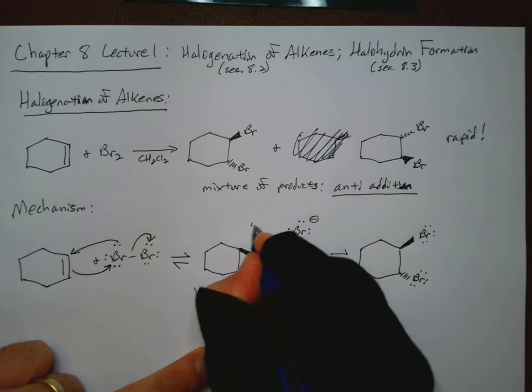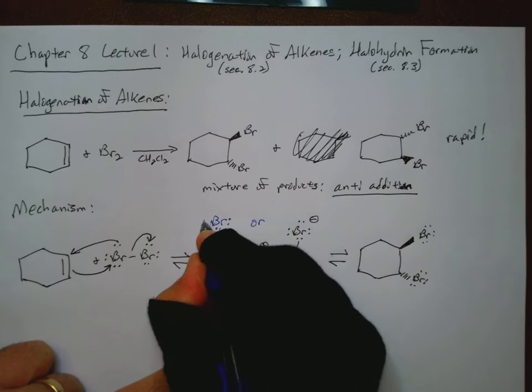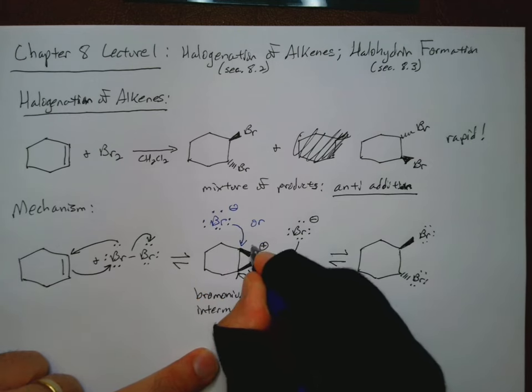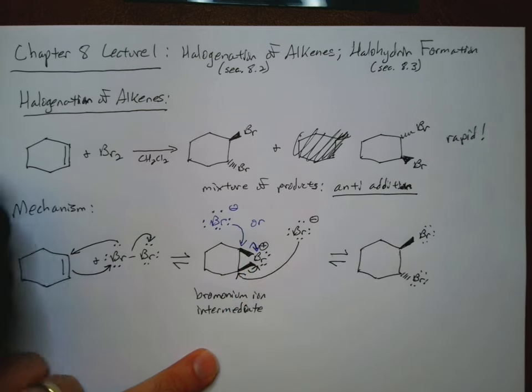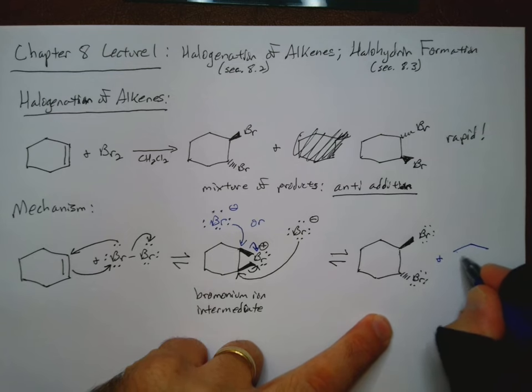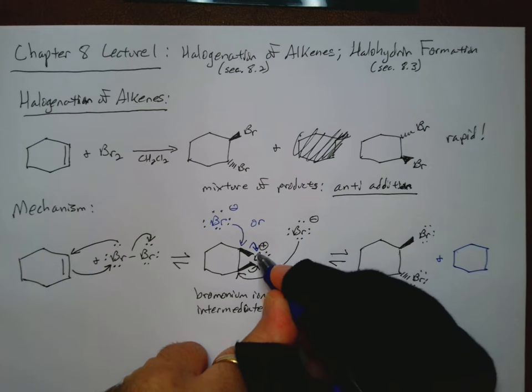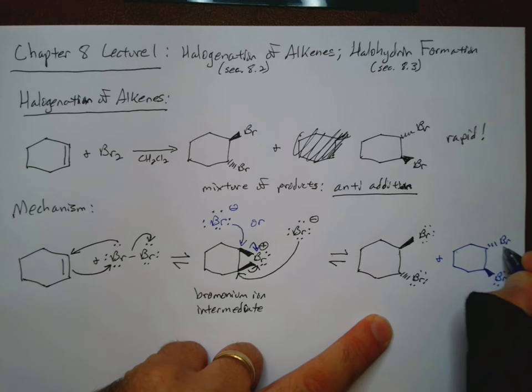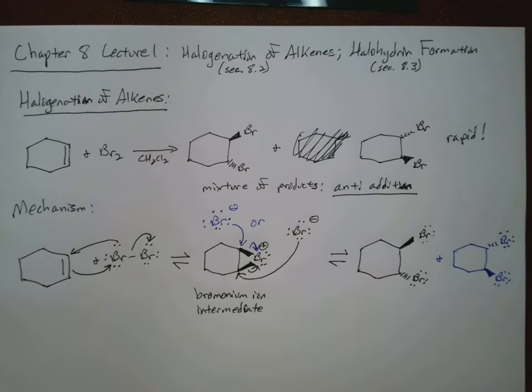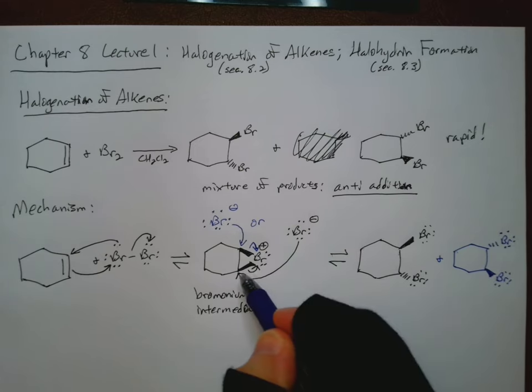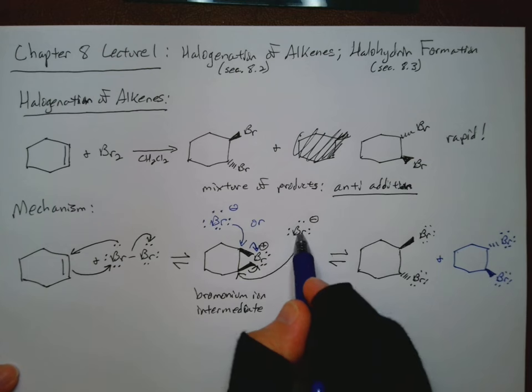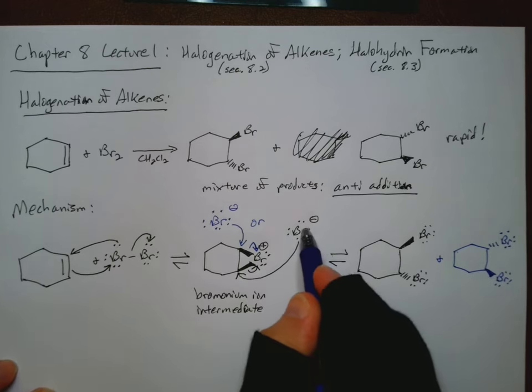Or, my bromine could attack the other carbon. And then we'll go ahead and get those electrons moving. And that now gives me my other product here. So those electrons move. That bond breaks. That pops open. So this bromine is now the wedge pointing out towards us. And the dash is the other bromine there. So there's two possible outcomes here, depending on which carbon gets attacked by the bromide ion.